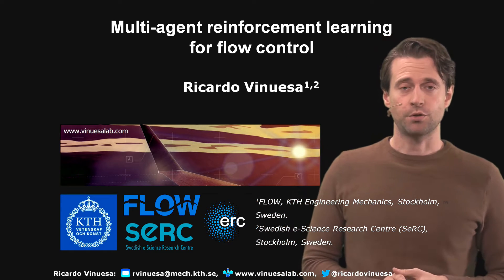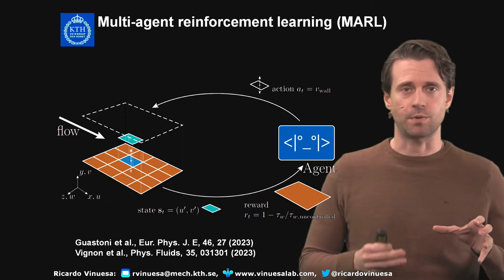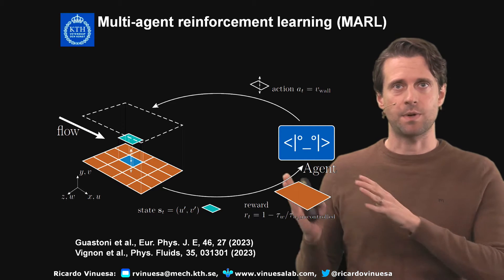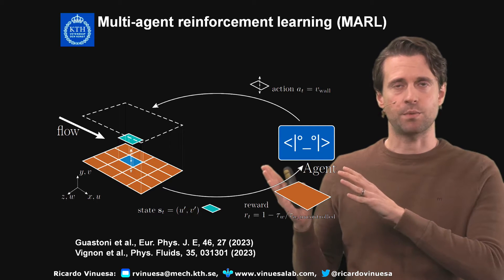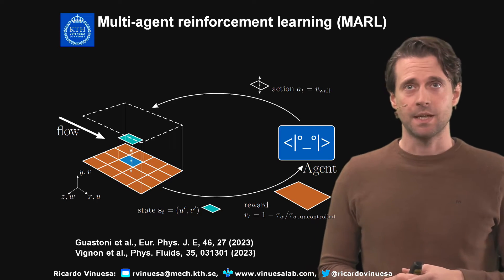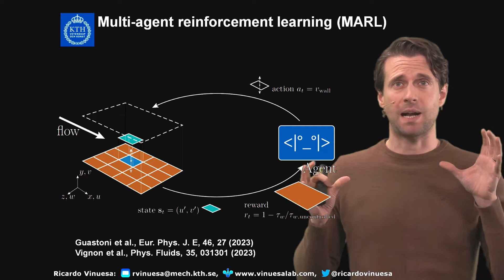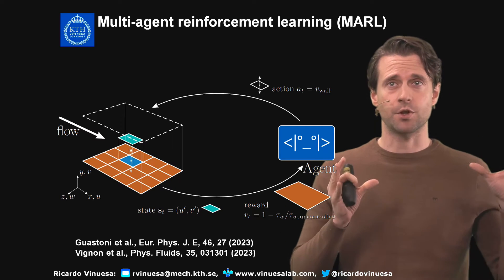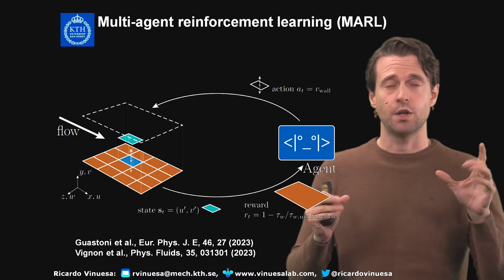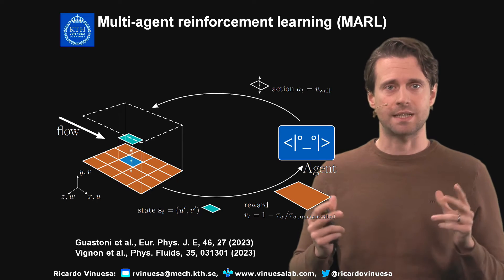We're going to continue from some of our previous videos on deep reinforcement learning. What I'm showing you here is a setup for a multi-agent reinforcement learning configuration to do control of turbulence in a channel.